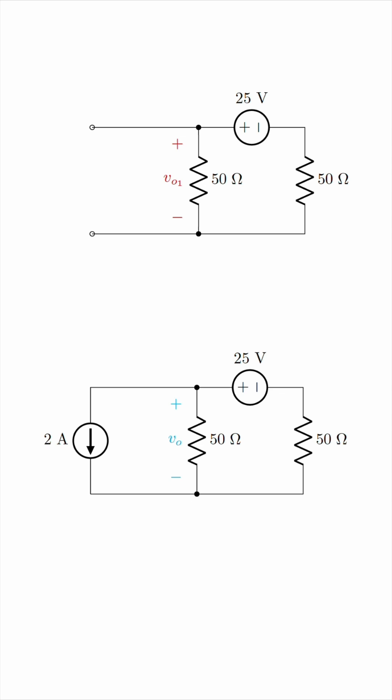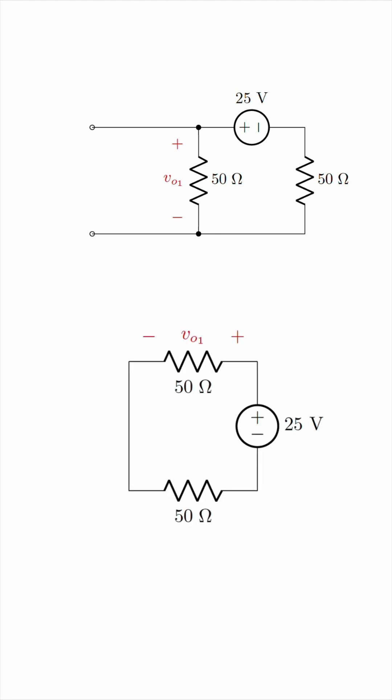But the circuit is now very easy to analyze. You can think of it as a voltage source in series with two resistors. Just rotate it 90 degrees, and verify that this is exactly the same setup. V01, in this case, will be 12.5 volts, because the voltage source splits the potential evenly between the two 50 ohm resistors.